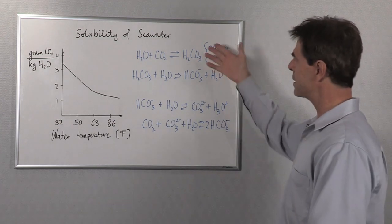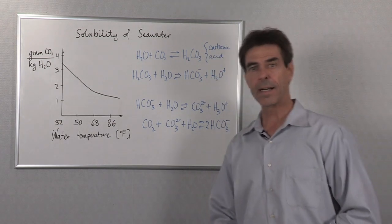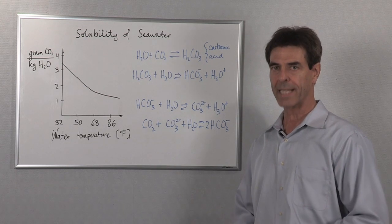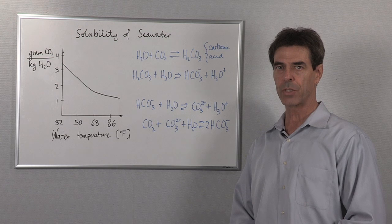And the result is, because this is acidic, is acid rain. And acid rain can then precipitate onto the ocean. That's another way to get CO2 into the ocean.